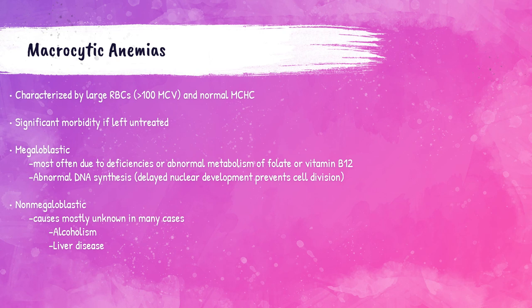The red blood cell index that describes the size of the red blood cell is the mean cell volume, or MCV. The normal MCV should be 80 to 100 femtoliters. If the patient's MCV is greater than 100 femtoliters, they will have macrocytes in their peripheral bloodstream. Megaloblastic and non-megaloblastic anemias are classified because patients have macrocytes present in their peripheral bloodstream.